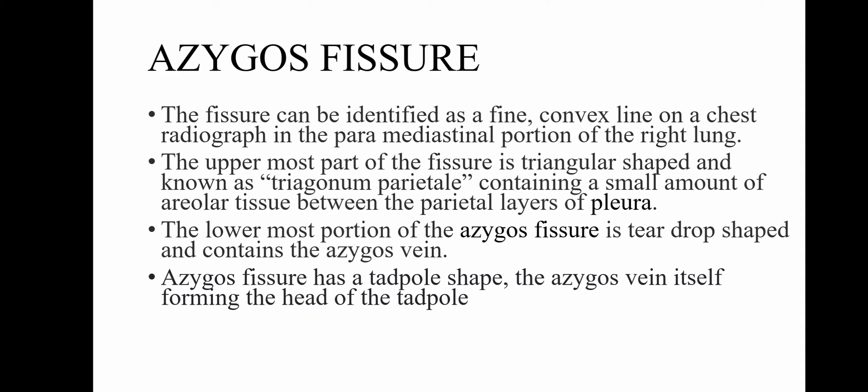The azygous fissure can be identified as a fine convex line on the chest X-ray in the paramediastinal portion of the right lung. The uppermost part of the fissure is triangular shaped and is known as the trigonum parietale. It contains a small amount of areolar tissue between the parietal layers of the pleura. The lowermost portion of the azygous fissure is teardrop shaped and contains the azygous vein. The azygous fissure has a tadpole shape, with the azygous vein itself forming the head of the tadpole.